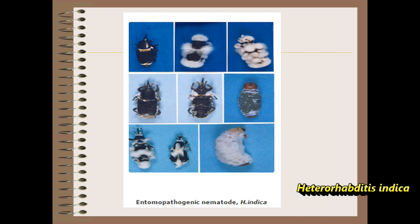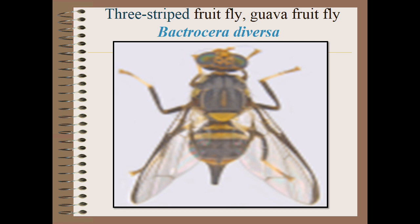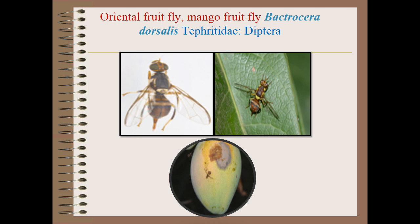The next pest is fruit flies. The three-striped fruit fly or Goa fruit fly is Bactrocera diversa — dark brown with hyaline wings and yellow legs. The next is the oriental fruit fly, also known as mango fruit fly. Maggots make a puncture on banana fruits by scraping and adults by oviposition. Maggots cause damage inside the fruits occasionally.